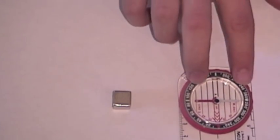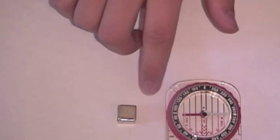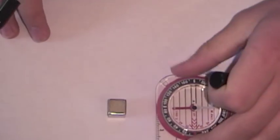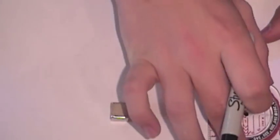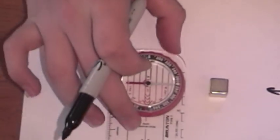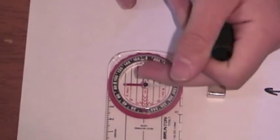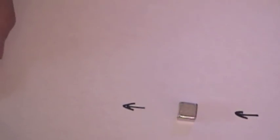So right here, the magnetic field is going in this direction. Let's go ahead and mark that. So it's coming into the magnet this way. And if we go to this side of the magnet, the magnetic field is coming out this way. So if we put an arrow there, there's the magnetic field.